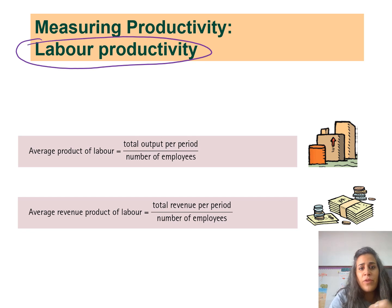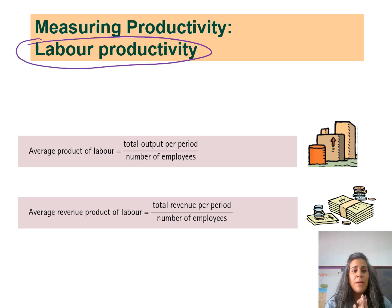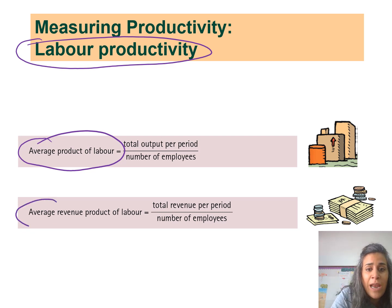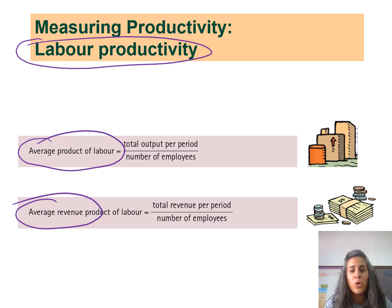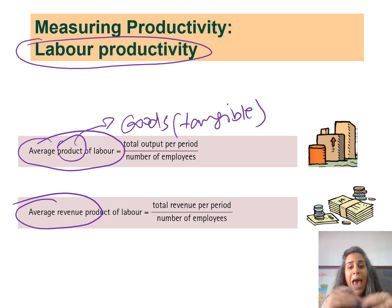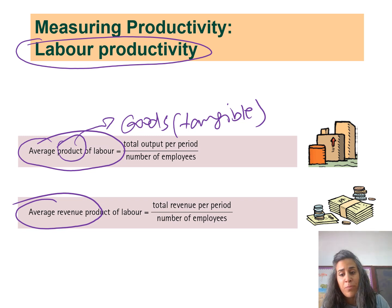When talking about labor productivity, it is the most commonly used measure of factor productivity. It can be measured by the average product of labor — the average amount of output each employee produces per period of time. When talking about product, we're referring to tangible or physical output. The formula is: total output per period divided by the number of employees or laborers.